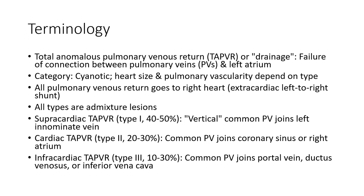TAPVR is a particularly cyanotic condition. Heart size and pulmonary vascularity depend on the type. All pulmonary venous return goes to the right heart, resulting in extracardiac left-to-right shunting.